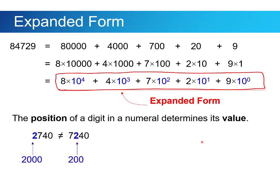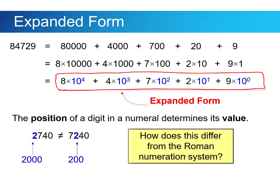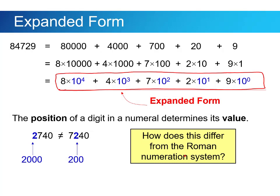The position of a digit in a numeral determines its value. If the 2 is the fourth one from the right, it's worth 2,000. But if 2 is third from the right, it's only worth 200. Now how does this differ from the Roman numeration system, for example? Someone might think that Roman numeration is place value because after all, if I write IV like this, it means 4. But if I write VI, it means 6.